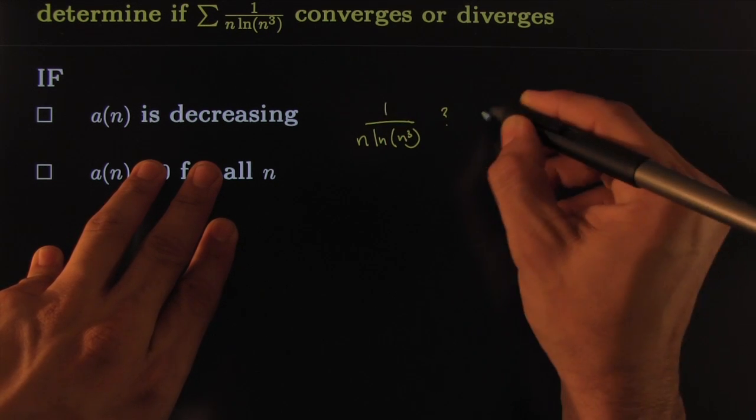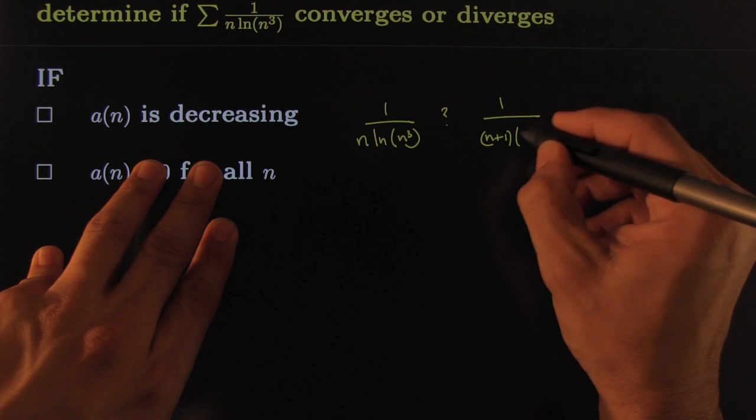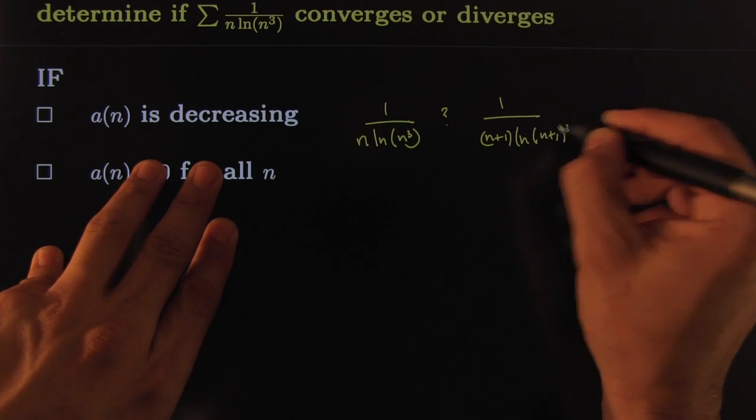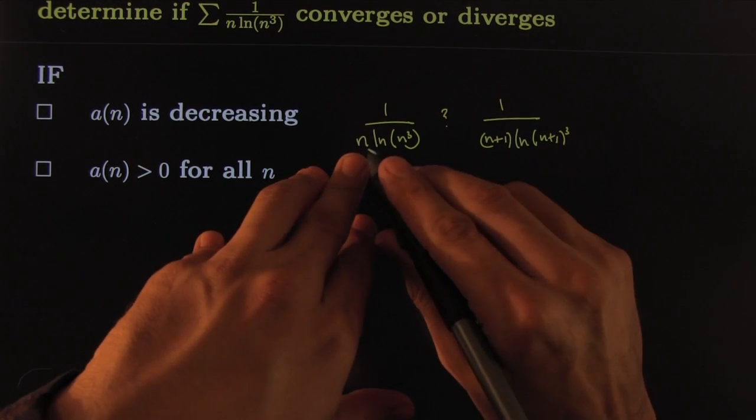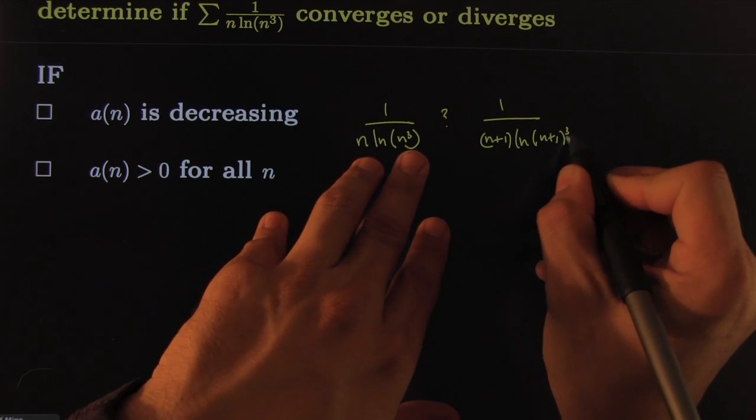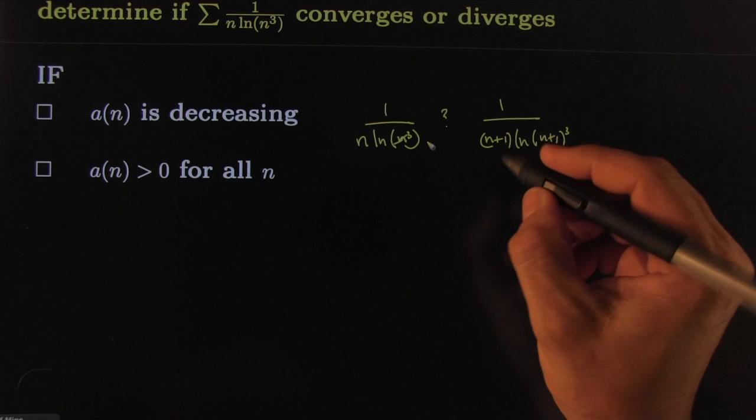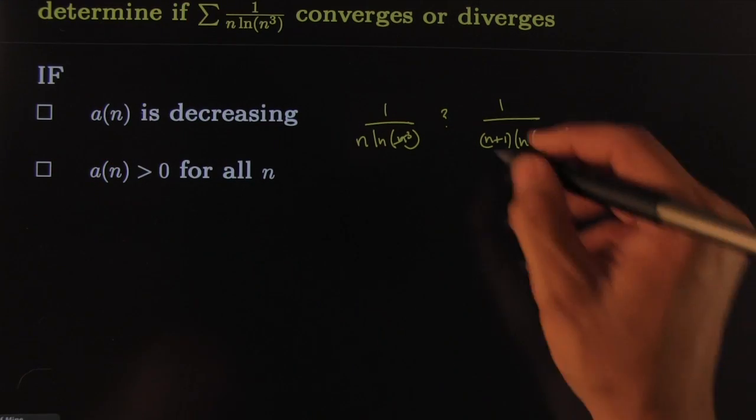That would be the next term ln(n+1)³. Now clearly this denominator is bigger because, for example, n+1 is bigger than n, and n+1 is bigger than n, therefore (n+1)³ is bigger than n³, and ln of a bigger number would give you a bigger number. So that would tell you that of course this denominator is bigger.